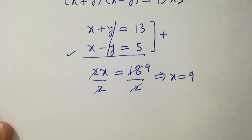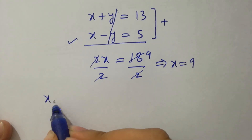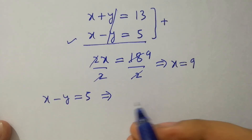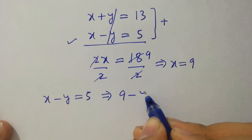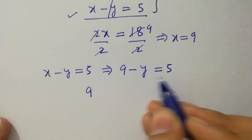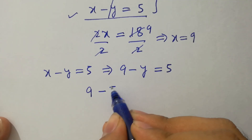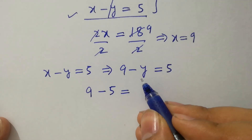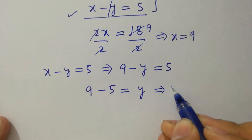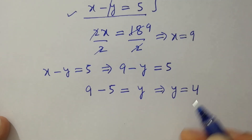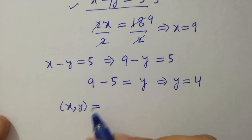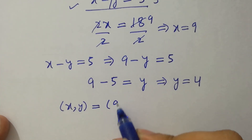To find y, take the equation x minus y equals 5. Put the value of x: 9 minus y equals 5. Therefore y equals 9 minus 5, which is 4. The value of x and y equals 9 and 4.